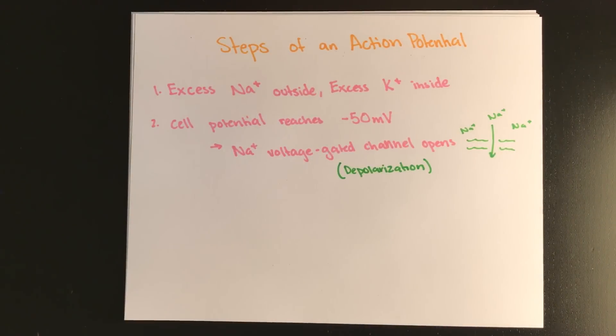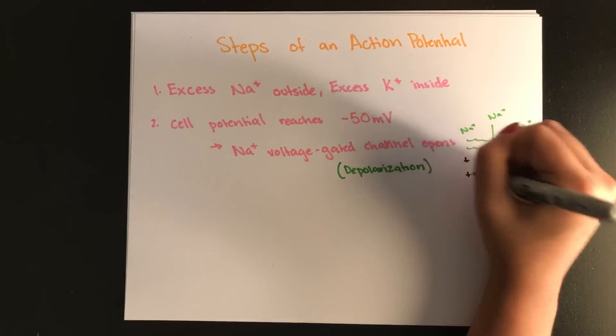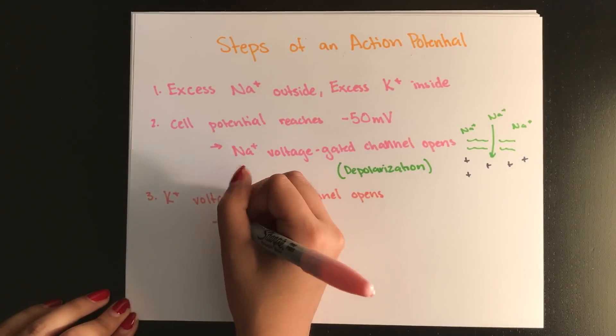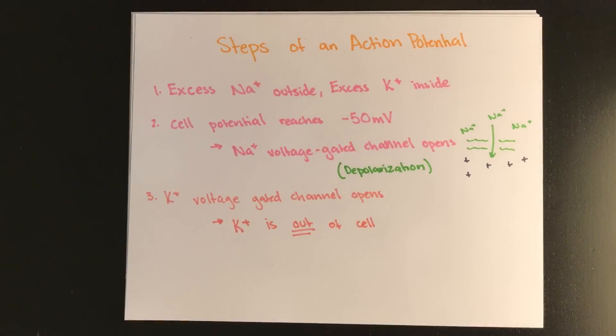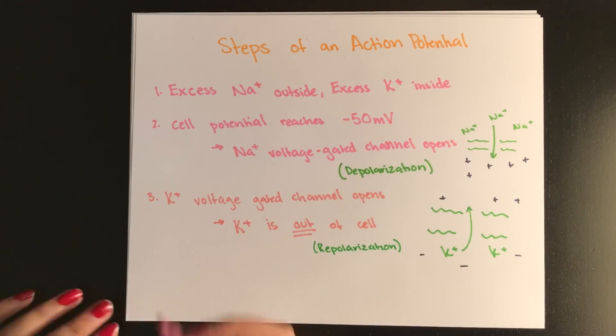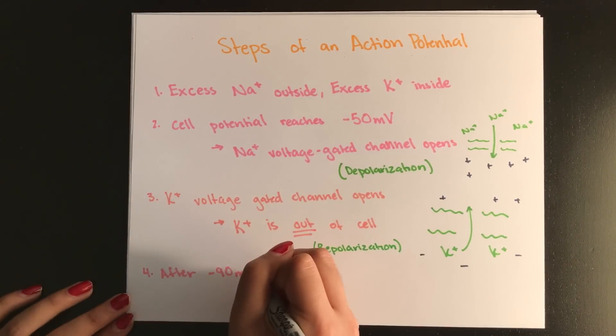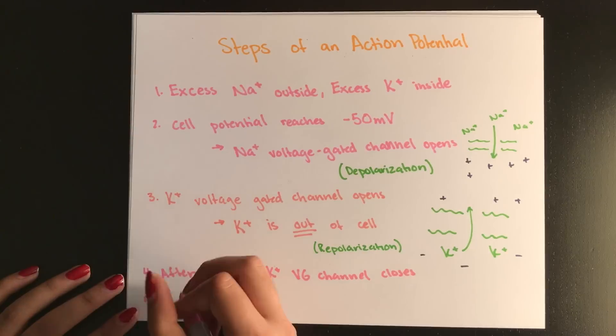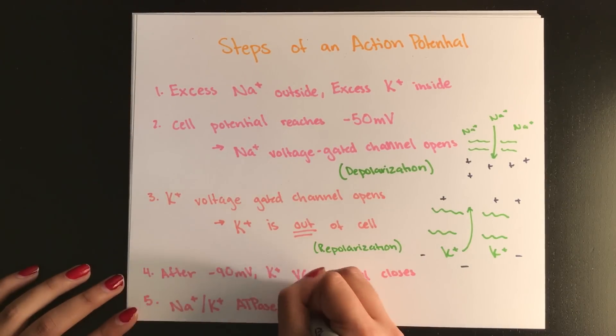Now the inside of the cell is actually extremely positive because you have this huge rush of sodium in. And now the potassium-voltage-gated channels open. So potassium floods out of the cell. So now the cell becomes more negative again, slowly. And this is called repolarization. Once the cell reaches negative 90 millivolts, the potassium-voltage-gated channel closes, and the sodium-potassium ATPase and the potassium-leak channels are open. And this will temporarily restore the balance that we originally had.